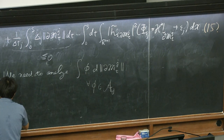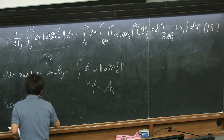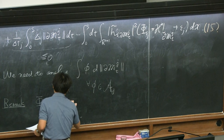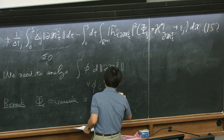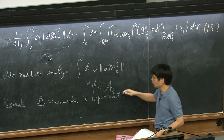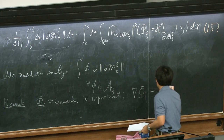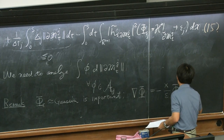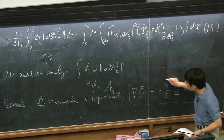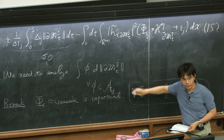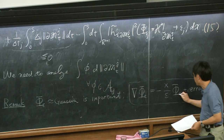One remarkable thing worth pointing out: the fact that the modifier is a Gaussian is actually very important. Along the way in doing the estimate for general test functions, you need to use the identity ∇φ ≈ −(ε/x)·φ + small error — this comes up in the estimate. That's why I mentioned yesterday that the Gaussian modifier is somewhat important.